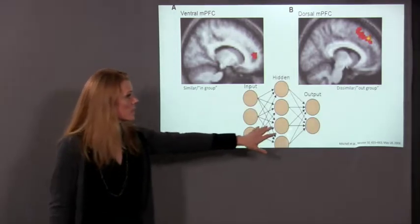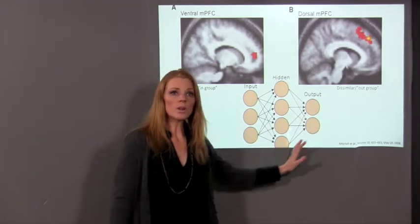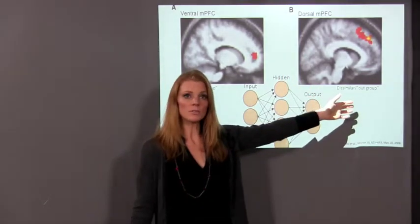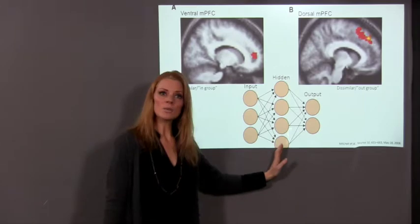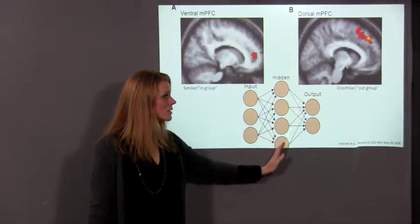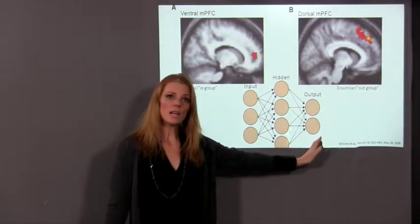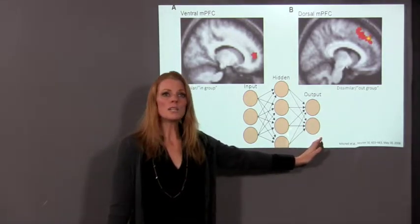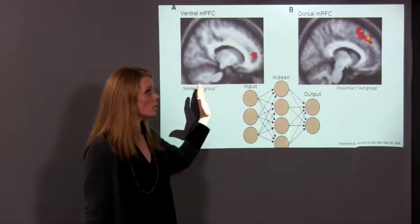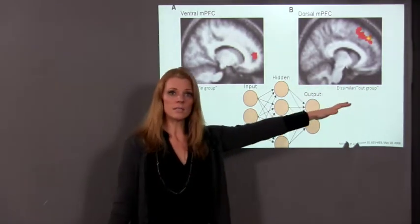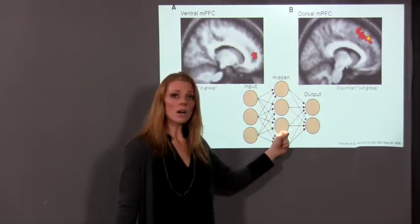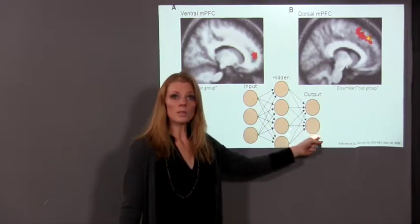When you put this in the context of how we process overall information, all of these processes — whether we're processing similar or dissimilar information — fall into this hidden realm. We still have sensory input coming in, we have hidden processing that takes place, and then we have some type of behavioral output. Where someone or a group of people falls along this similar-dissimilar, in-group-out-group spectrum can make a large difference in the output that we have.